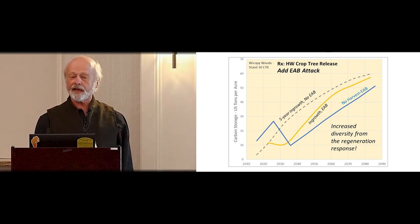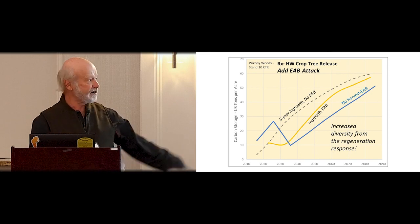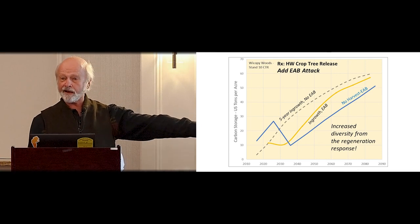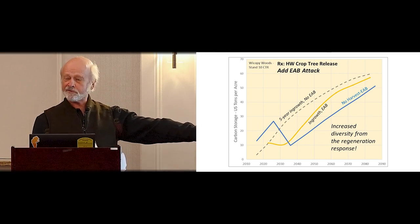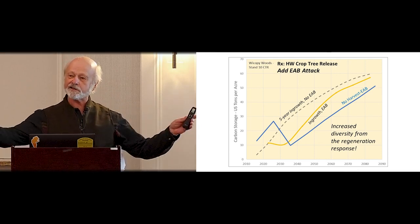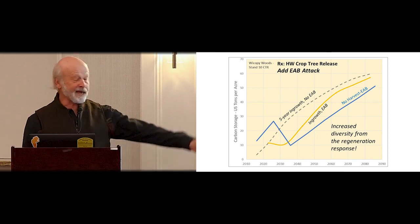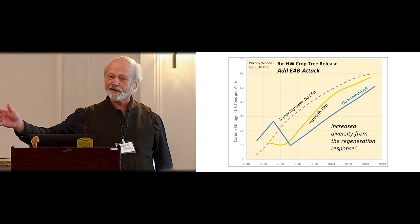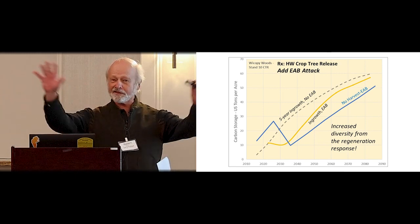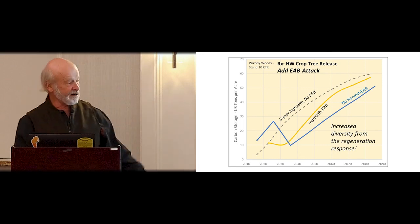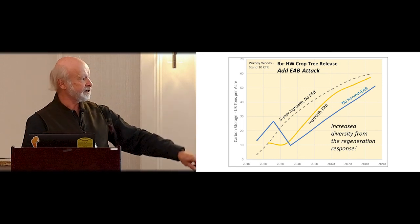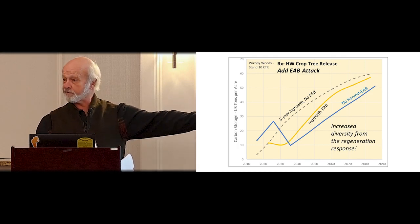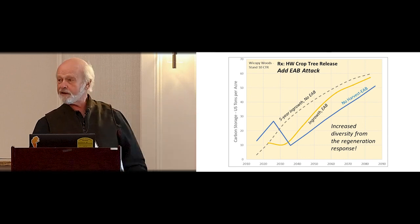Then I realized I had to do that in the control scenario too — the unmanaged case. Because that was all ash, it ends up even worse. So here we have the magic elusive case where silviculture actually beats no management — admittedly by invoking the emerald ash borer in a heavy crop tree stand, which are things you don't often see together, but there it is. The message here is clearly the diversity we got from getting rid of that pure ash stand.